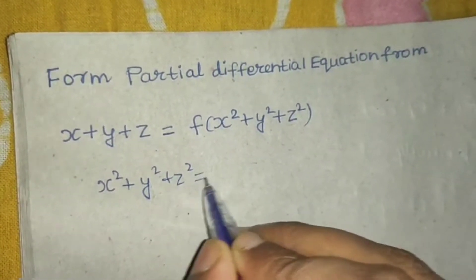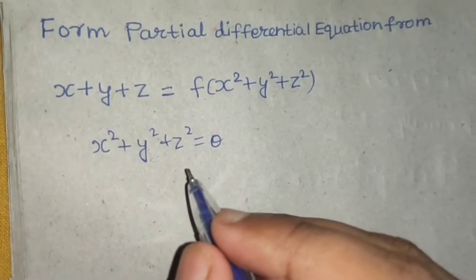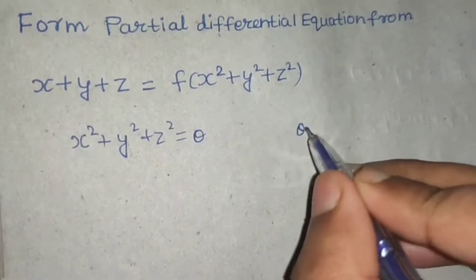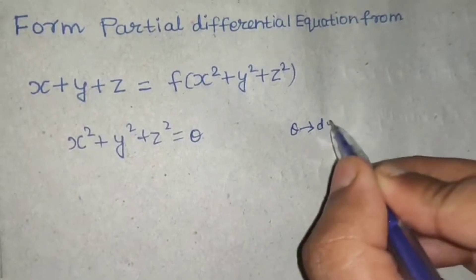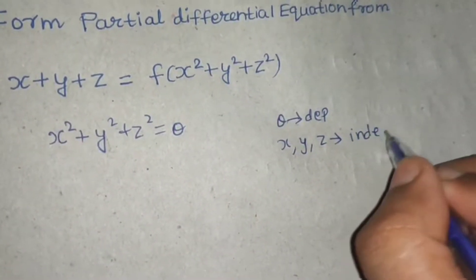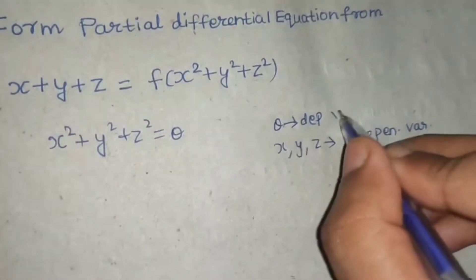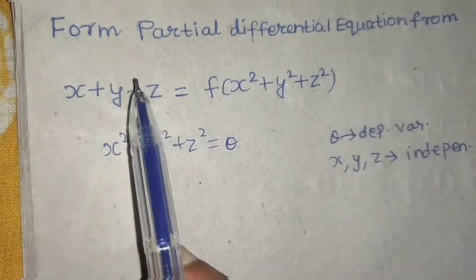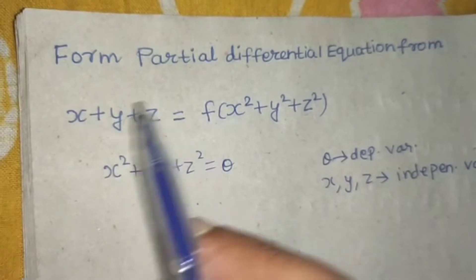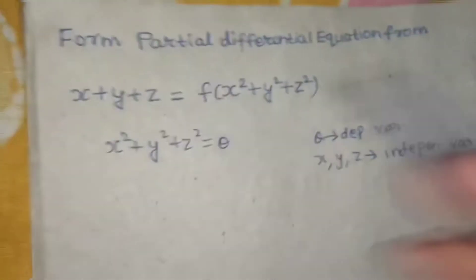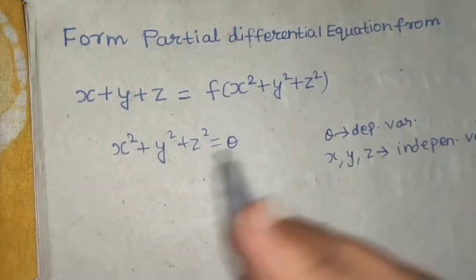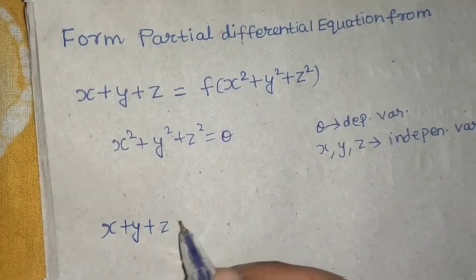In this question, whatever is inside the function, we assume that to be some other variable. So x squared plus y squared plus z squared, let that be theta. Keep in mind that theta is a function of x, y, z, so theta is dependent, while x, y, z are independent variables. In the PDE convention, z is always the dependent variable depending on x and y, so x and y are the independent variables. Substituting theta, we rewrite the equation as x plus y plus z equals f of theta — call this equation one.